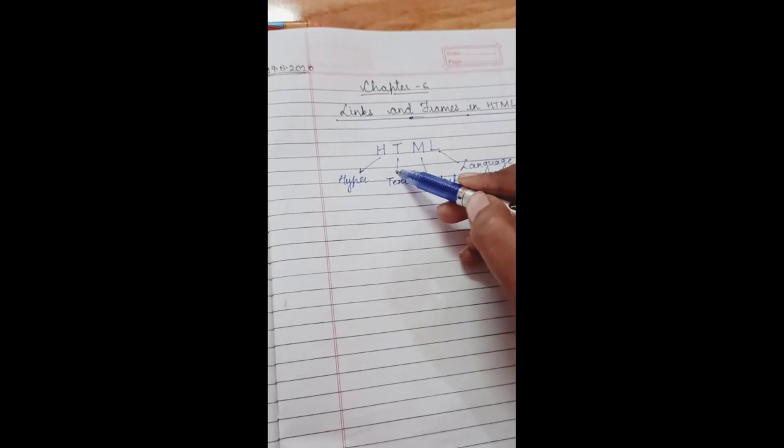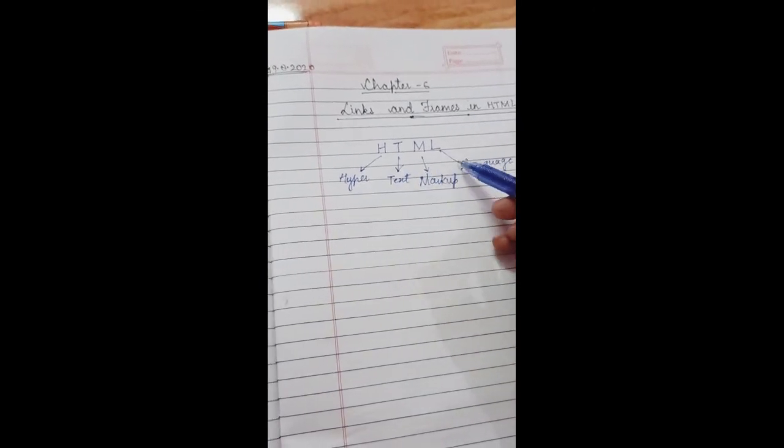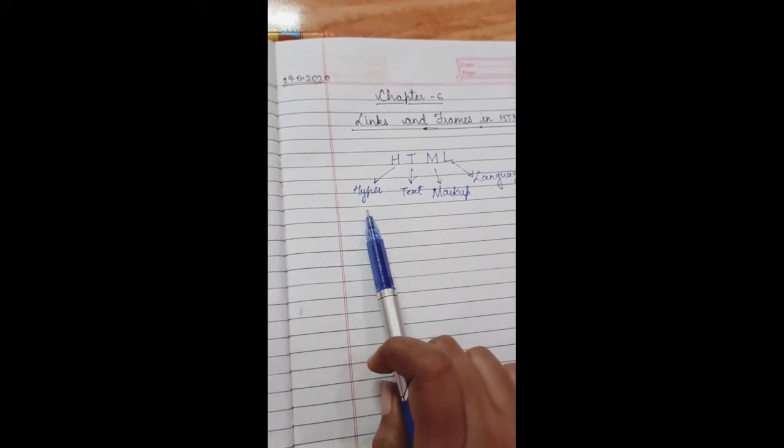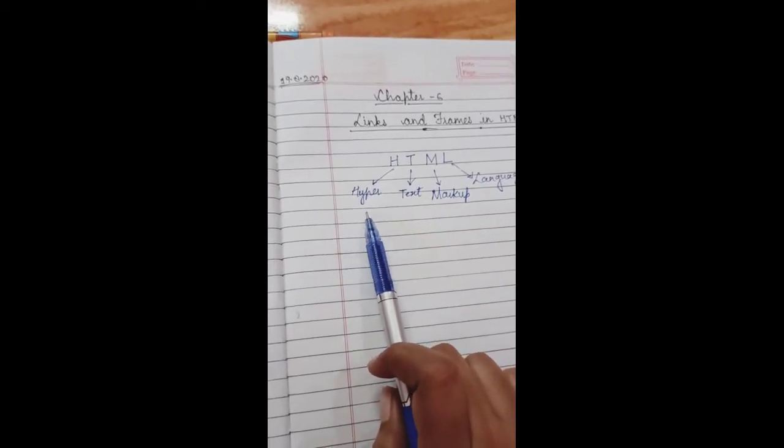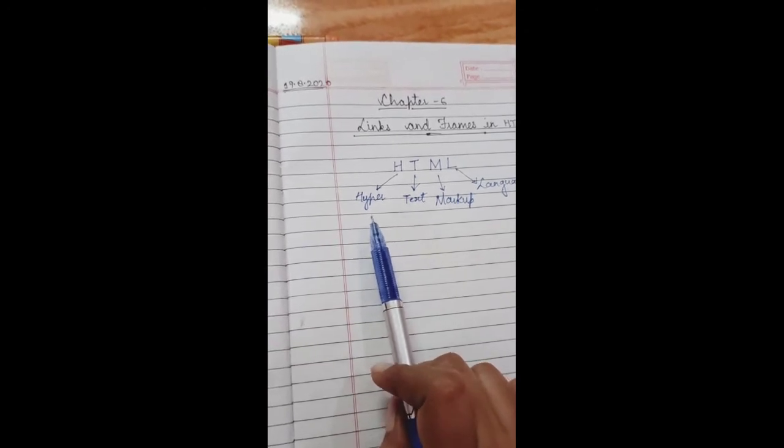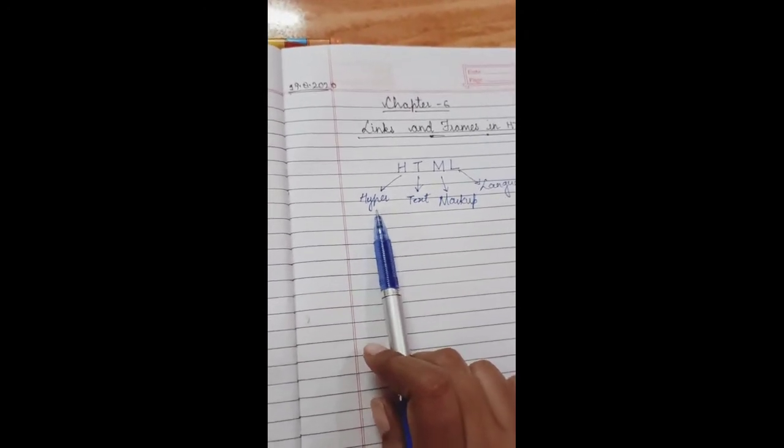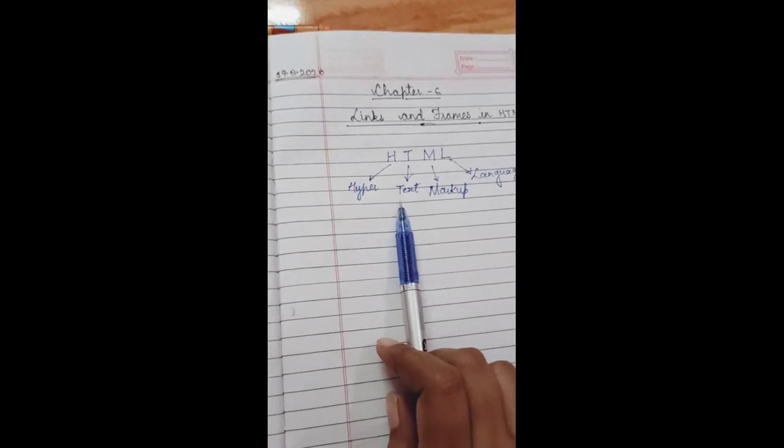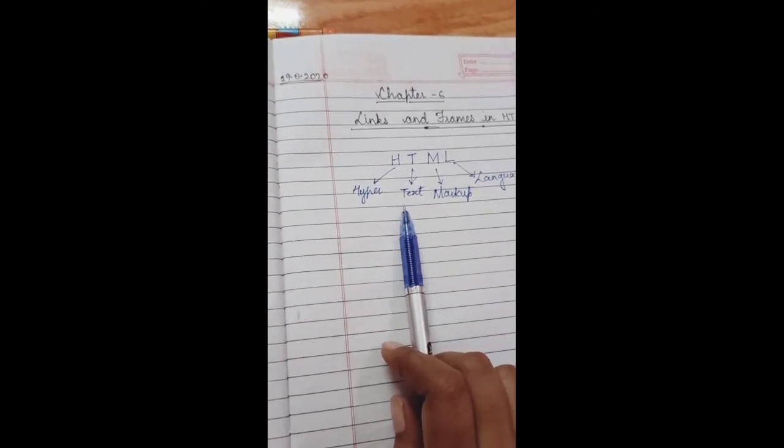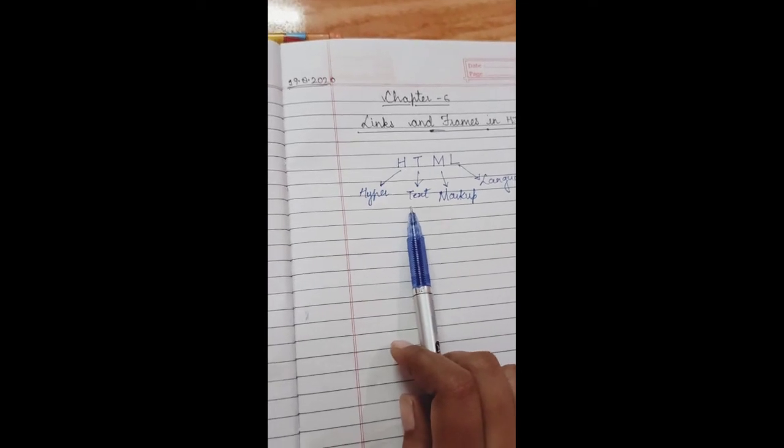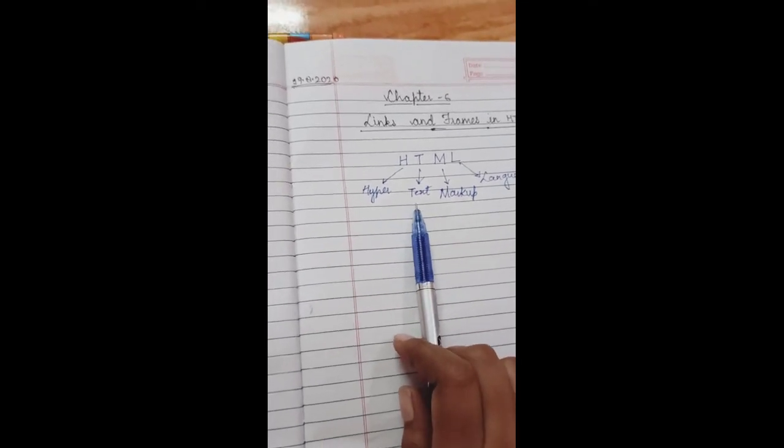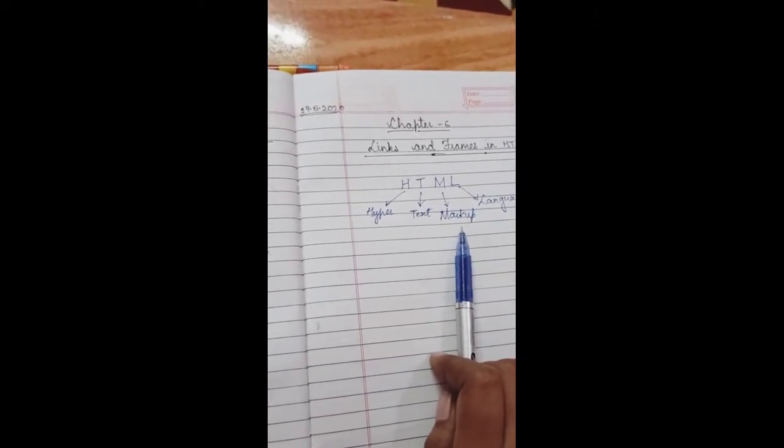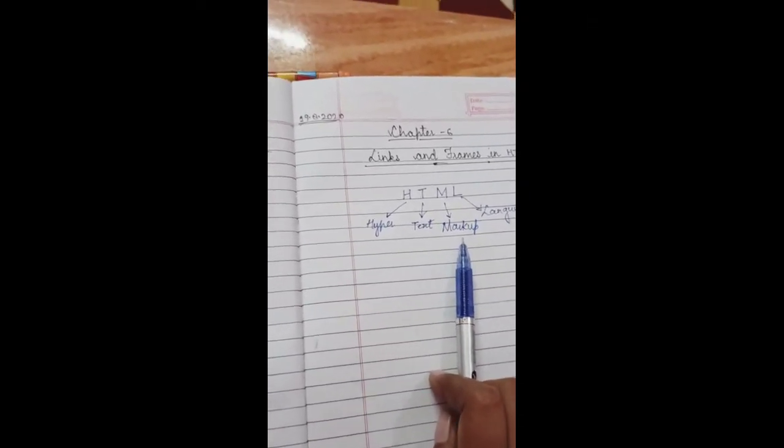Now what is hyper? Hyper is nothing but it is just a link or a reference to where you have to navigate. Text is nothing but the data or information. So whatever data you want to be displayed, that information will be displayed in a form of text. Markup - it is predefined statements present in this language.